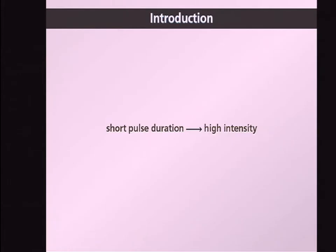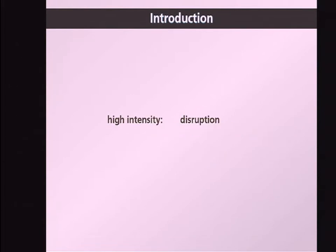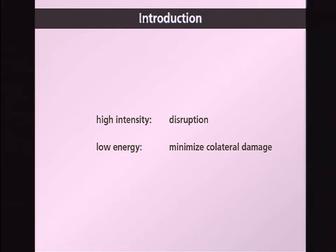Femtosecond laser pulses are very short, and because they're very short, they have really high intensity. The key point is that they have high intensity even at low energy. The high intensity is necessary to disrupt materials — that's the part of femtosecond pulses that we'll exploit. The low energy is important because it allows you to achieve exquisite precision and to limit the disruption to a very small volume.